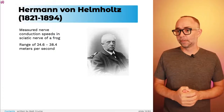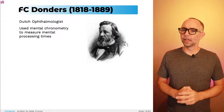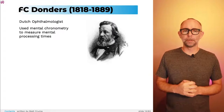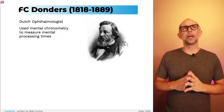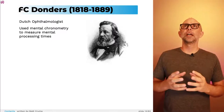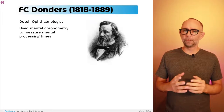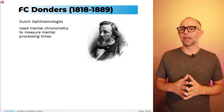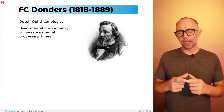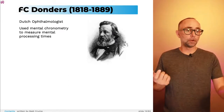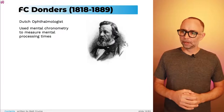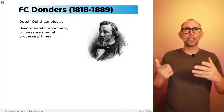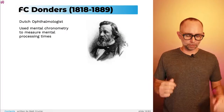Around the same time, a contemporary of Helmholtz was Donders — a Dutch ophthalmologist. He was thinking that the brain has limitations in how fast it can process information, and he set out to develop behavioral tasks to estimate how long different information processing stages might take — measuring how long it took cognition to accomplish different kinds of processing tasks.